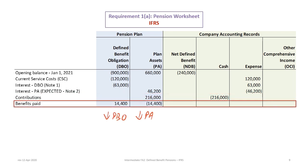The next item is the benefits paid — no calculation necessary, this is a given number. One thing to note is that benefits are not paid by the company; they are paid by the trustee, so there is no cash in the transaction. A lot of students make the mistake of putting benefits to cash. All that happens is the defined benefit obligation decreases by $14,400 on the trustee's books, and the plan assets will also decrease.